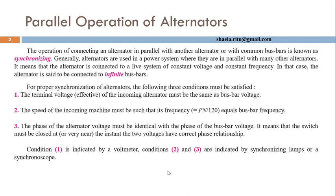Now we are going to see the conditions required for paralleling operation. Before an alternator is connected in parallel, these conditions must be fulfilled. After the conditions are fulfilled, the proper procedure is followed and synchronization is completed. The first condition is that the terminal voltage of the incoming alternator must be the same as the bus bar voltage.